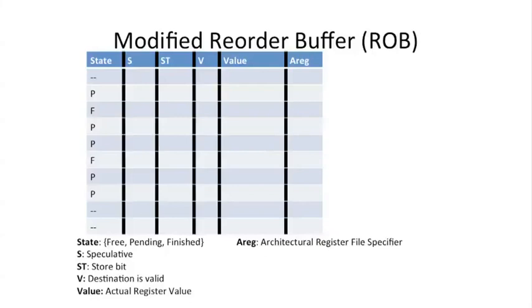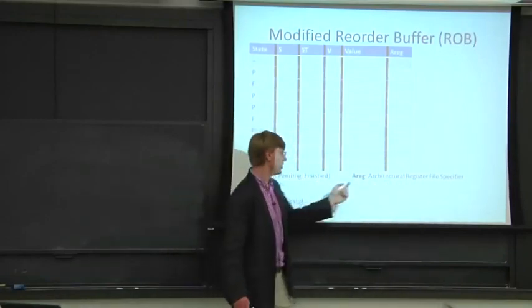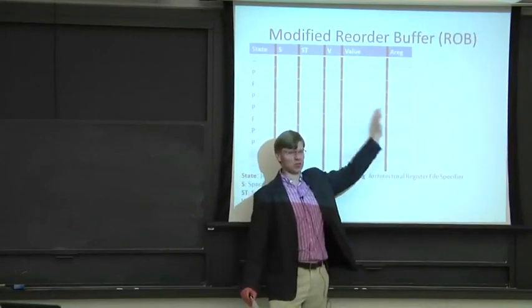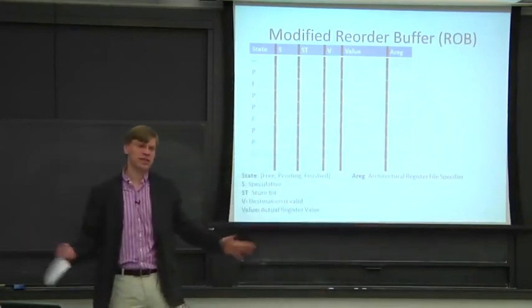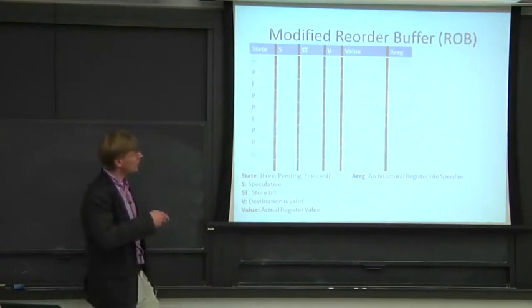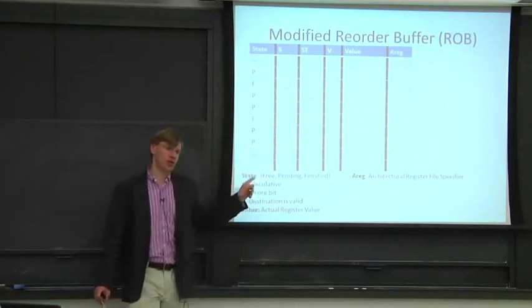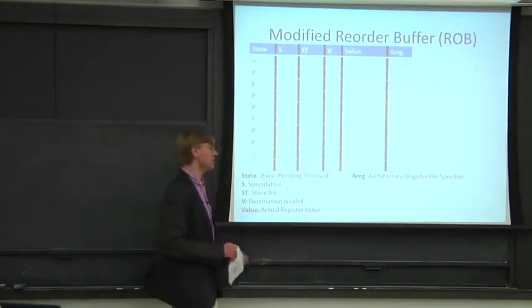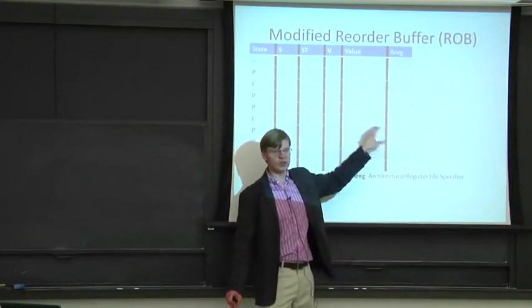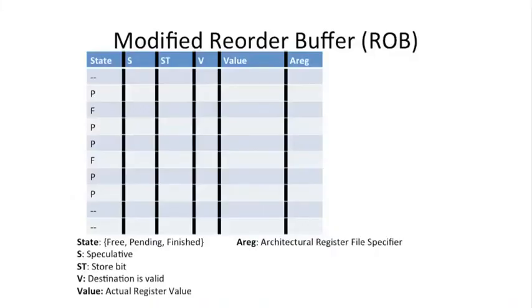Let's look at how we have to modify the reorder buffer. It still looks like our reorder buffer from before. We still need to know the architectural register number for the particular instruction — this tells us where to write to the architectural register file at commit. Because we did renaming, we have more physical registers and we can't just have an identity map. We now actually store values in our reorder buffer instead of waiting in the physical register file.